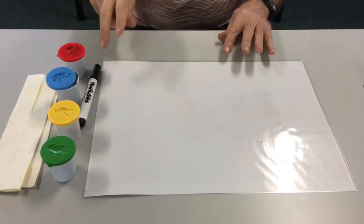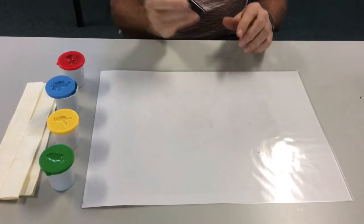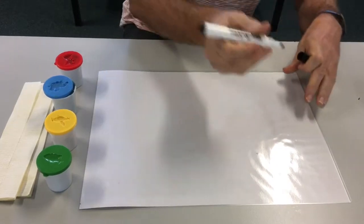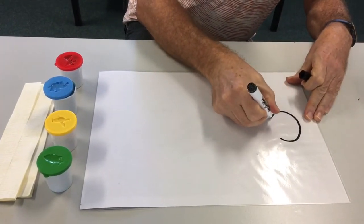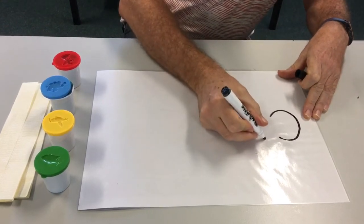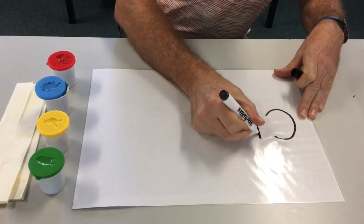Now first of all, I'm going to write my name on the white sheet of paper, and you can get mum or dad to do this for you to write your name.